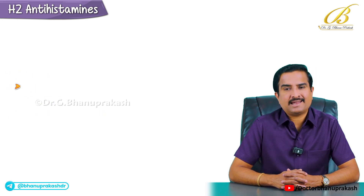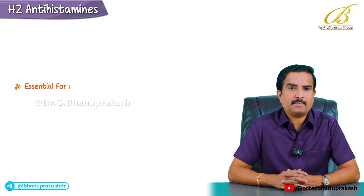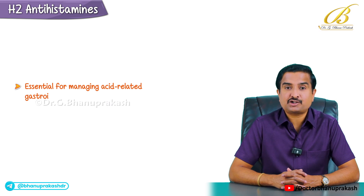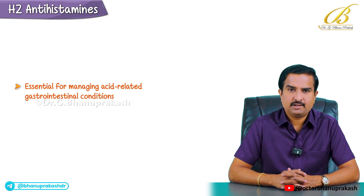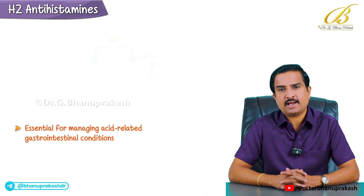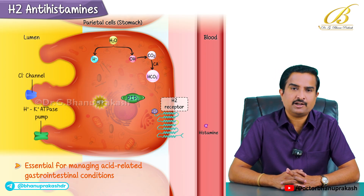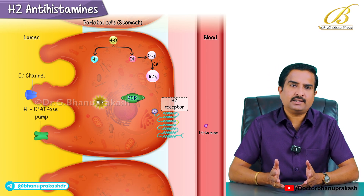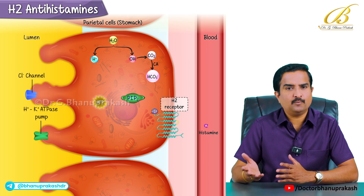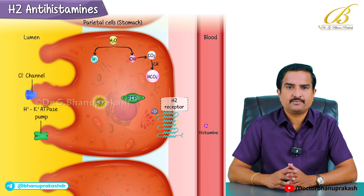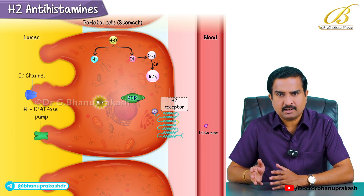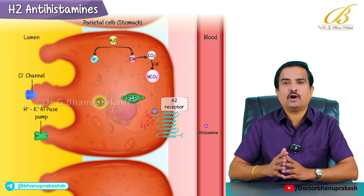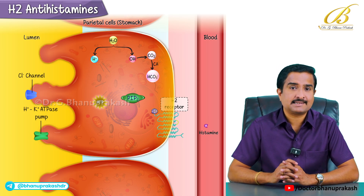H2 antihistamines are essential for managing acid-related gastrointestinal conditions — not like H1 which we use for allergic reactions. H2 antihistamines are mainly used for managing acid-related gastrointestinal conditions. H2 antihistamines obviously target H2 receptors, and these H2 receptors are found on the gastric parietal cells in the stomach.